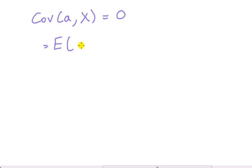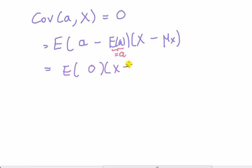So this here is equal to, using the definition of covariance, a minus the expected value of a, times x minus the expected value of x. But we know that the expected value of a constant is a constant using expectation rules. So this automatically goes to zero. That is, this here is a minus a, which is zero, times x minus mu x. But the expected value of zero times a number is the expected value of zero, which is a constant, which is equal to zero.